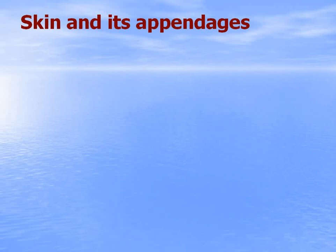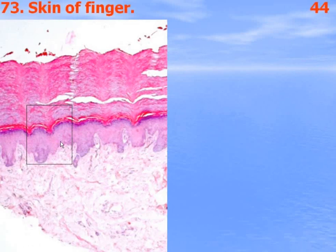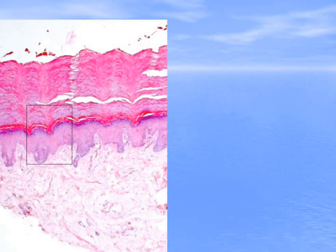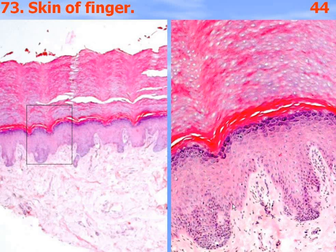Two preparations from the skin and its appendages unit. Epidermis and dermis of thick skin — skin of finger, thick skin. Epidermis is stratified squamous keratinized epithelium. It consists of five layers.